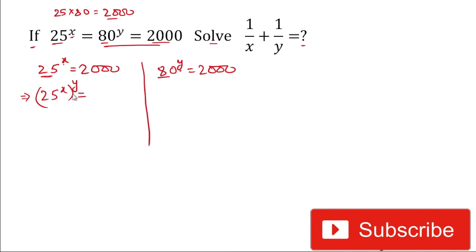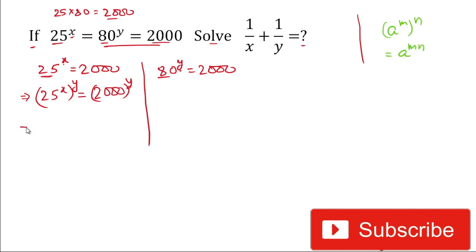As we have multiplied by power y, the right-hand side must also be raised to the power y. Using the formula (a^m)^n = a^(mn), it becomes 25 to the power xy equals 2000 to the power y. We can take this as Equation 1.